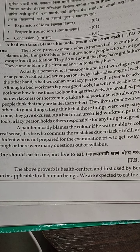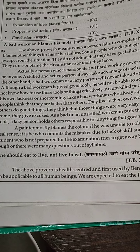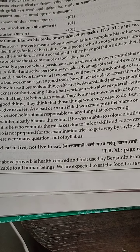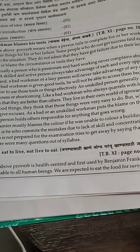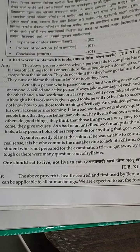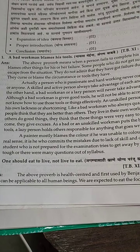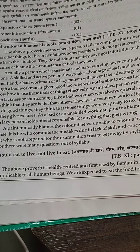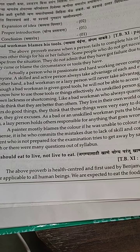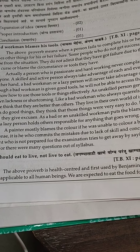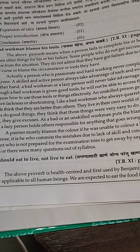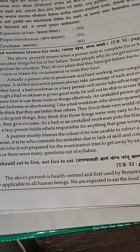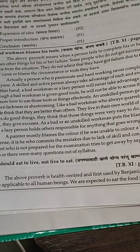For example, a painter blames the color if he is unable to paint the building skillfully. In the real sense, he would be committing the mistake due to his own lack of skill and concentration. There is one example here about colors — the painter who cannot skillfully color the building then blames the colors.